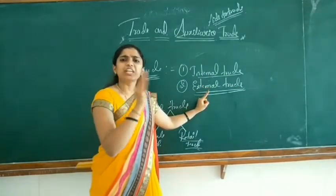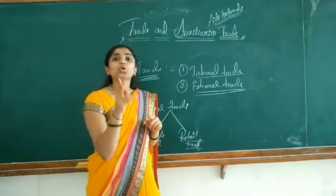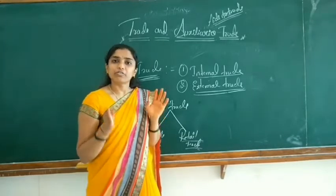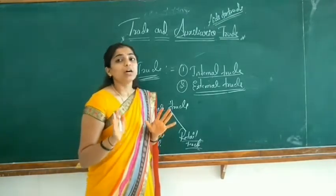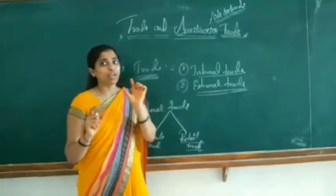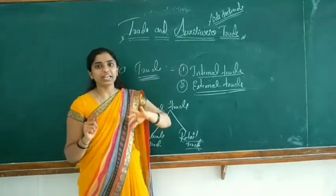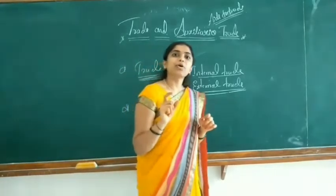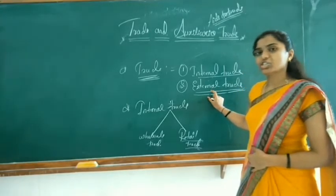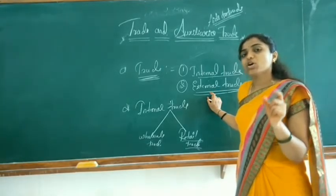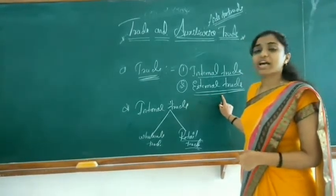The transaction may be between any individuals or any company but it must be between two or more countries. For example, India produces sugar and sells it to the USA — the transaction is between USA and India. This type of trading is called external trade, meaning the transaction is conducted between individuals or organizations across more than two countries.